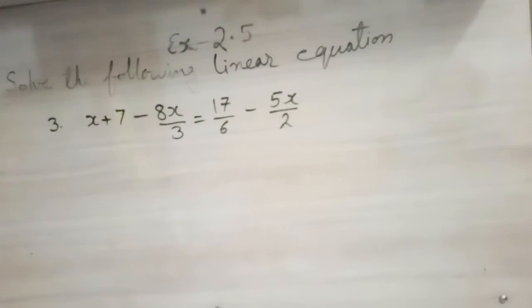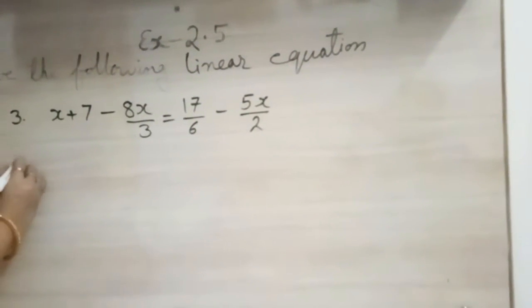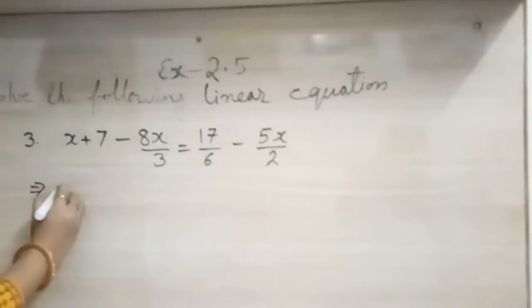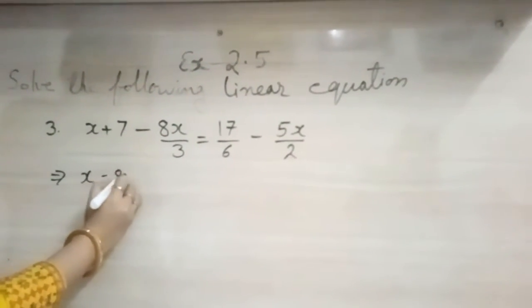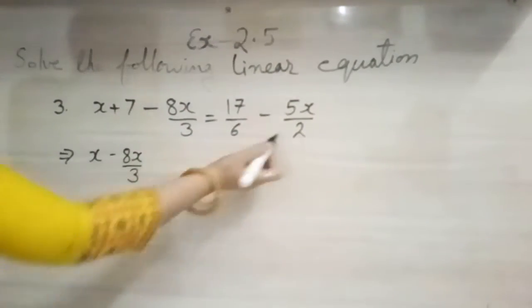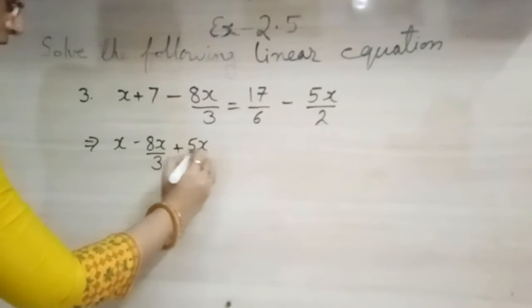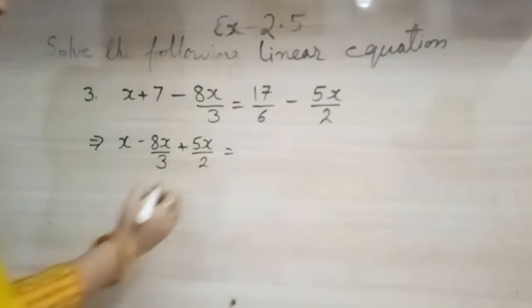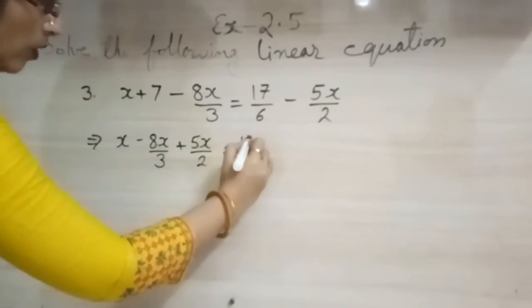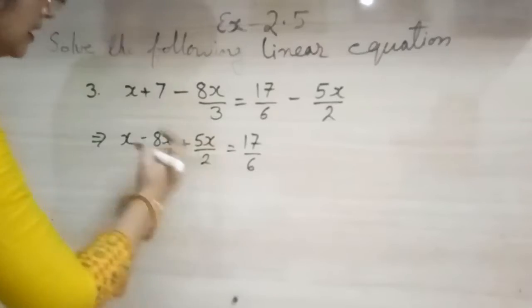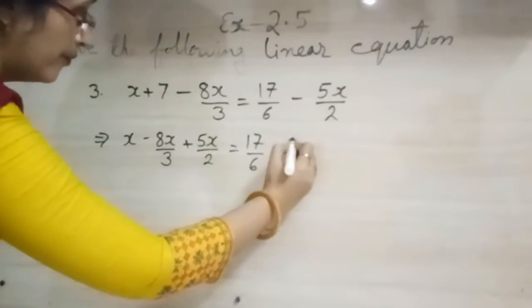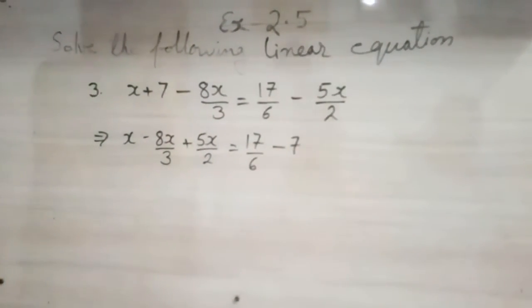So first step we will bring all those terms to one side who are having variables. So x minus 8x upon 3, and here it is in minus, we will transpose so it will become 5x upon 2 is equals to 17 upon 6 will come as it is. It is in plus, it will go there so it will be in minus.